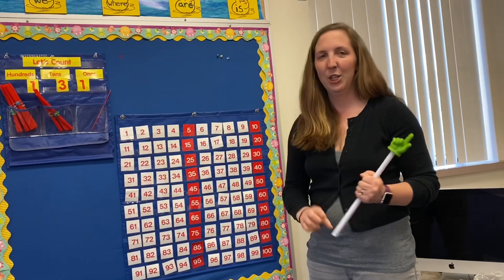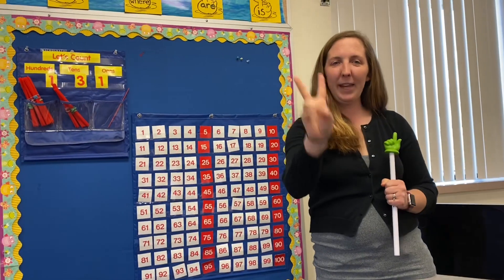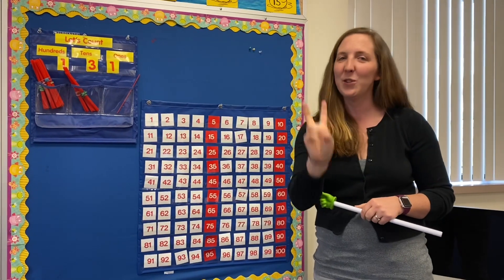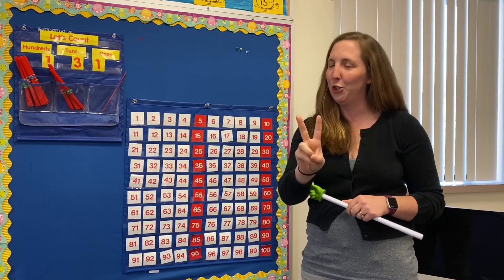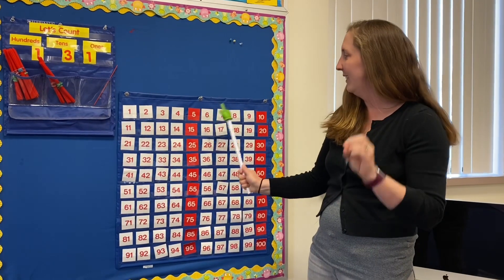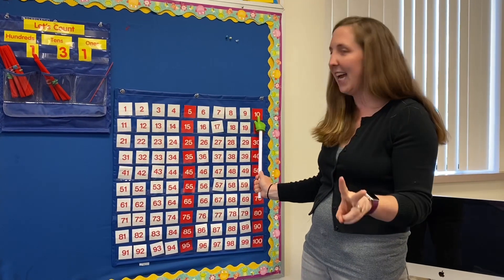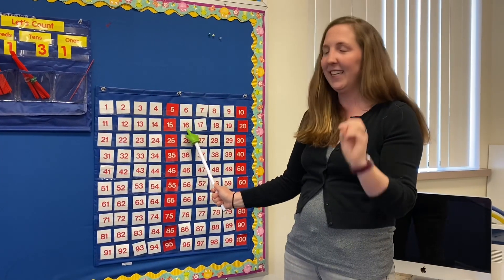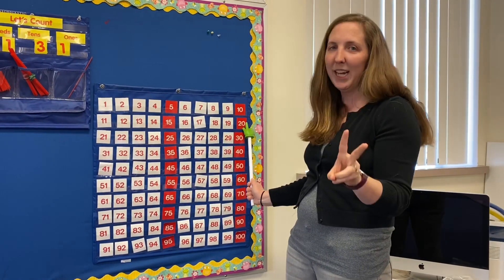Today we are gonna skip count on our hundred chart. Sing along with me. Show me two fingers. Skip count in steps of two. Count by twos to twenty — you'll get to twenty twice as quickly when you count by twos. Two, four, six, eight, ten, twelve, fourteen, sixteen, eighteen, twenty.